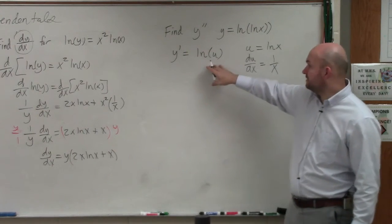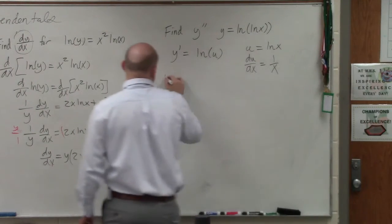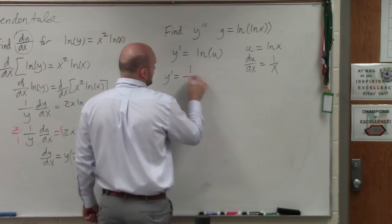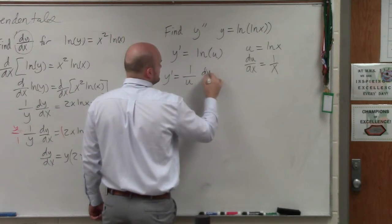So to take the derivative of ln of u in this case, y prime is going to be 1 over u times du dx.